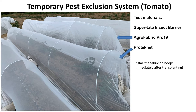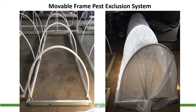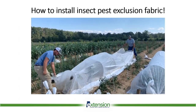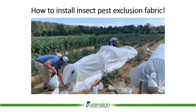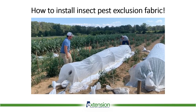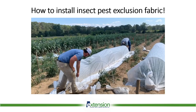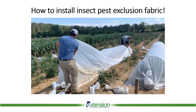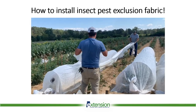Here you are looking at two fabrics — Agrofabric Pro 19 and ProtectNet — protecting tomatoes. Another way to install the netting is to put the net or fabric over movable frames. This can be done very effectively on raised beds in community gardens, and some farmers and gardeners even have these on hinges so you can lift the frame up to reach the plants. This video shows installation of the Superlite Insect Barrier, one of the low-cost fabrics, with sandbags used to keep the fabric down over multiple rows of tomatoes.